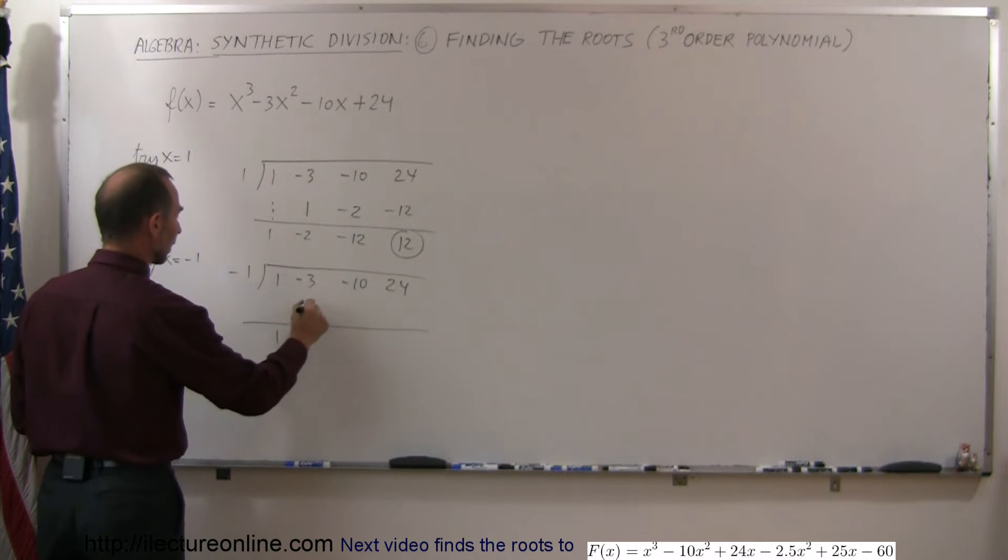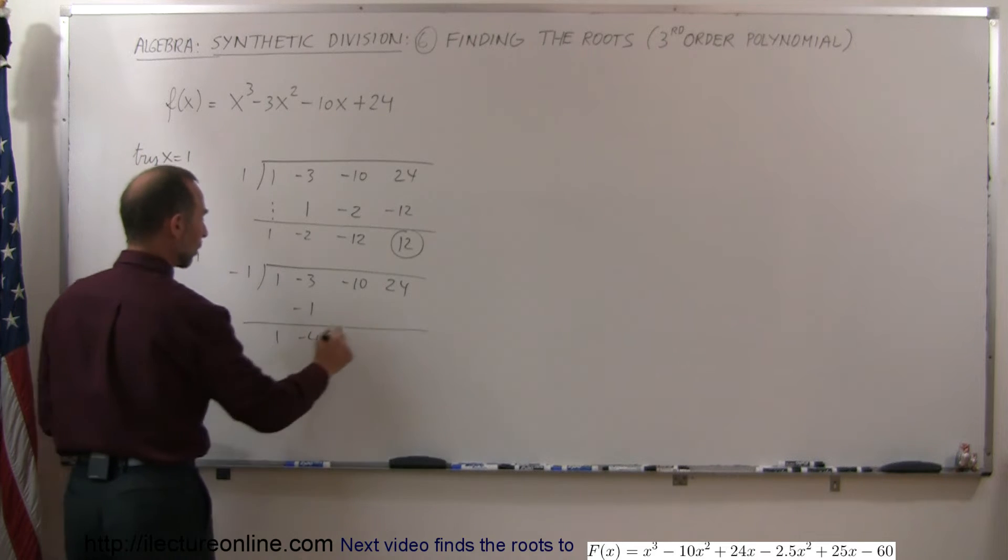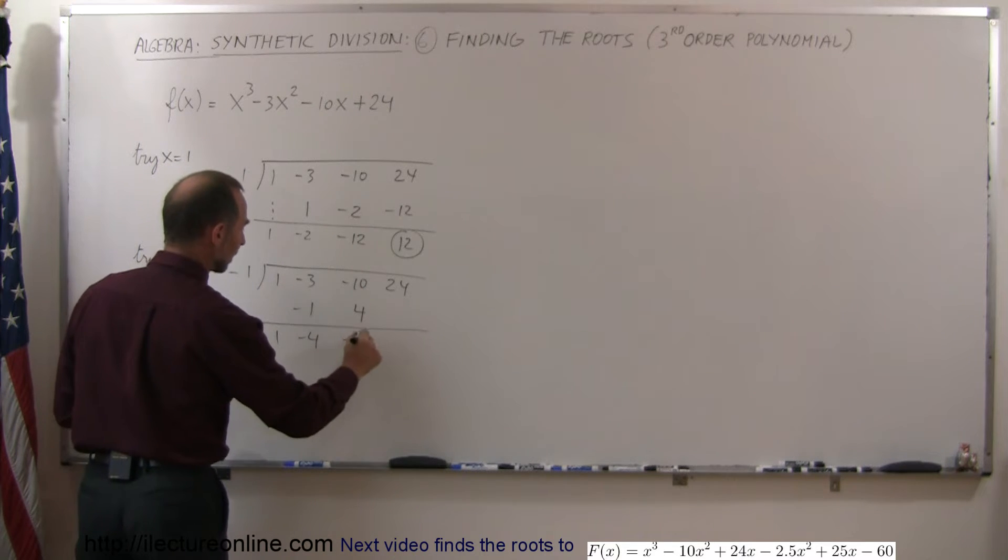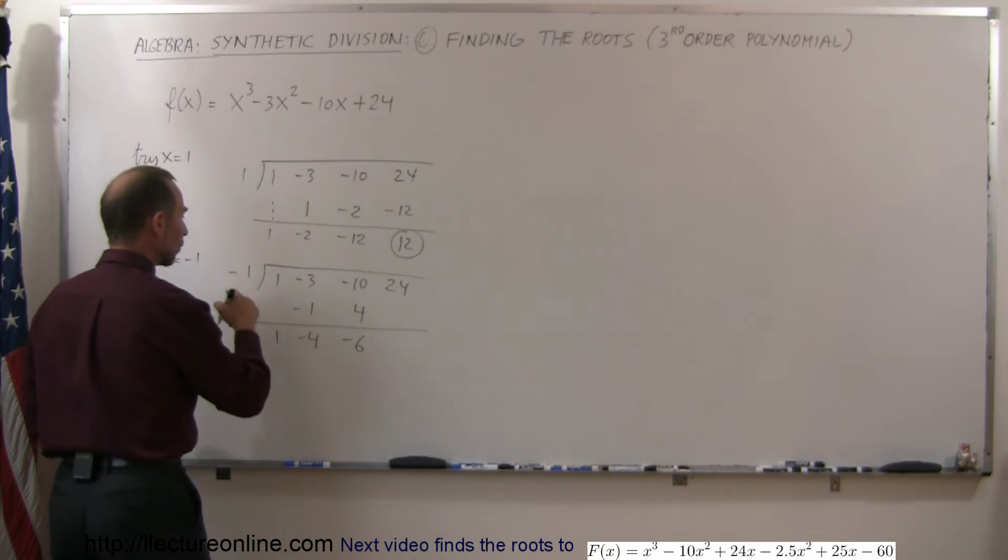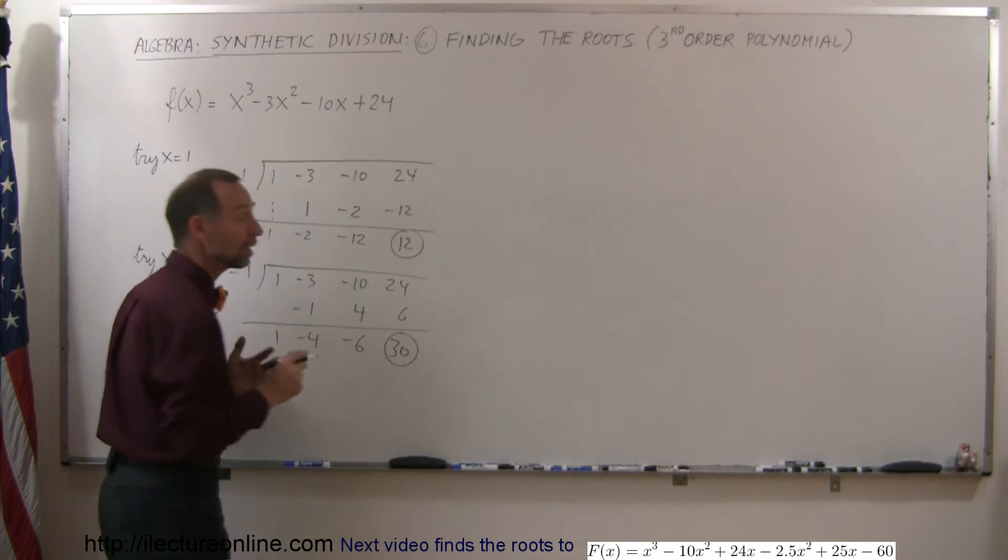1 times negative 1 is negative 1. Add it together, negative 4. Negative 4 times negative 1 is a positive 4. Add them together, get negative 6. Negative 6 times negative 1 is 6. Add it together, you get 30. Our remainder, again, we did not find the roots.